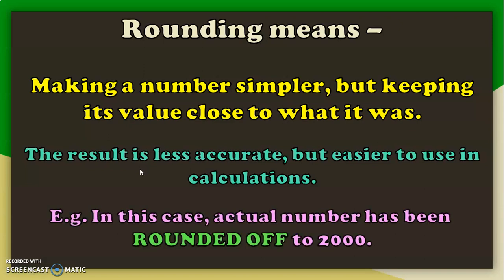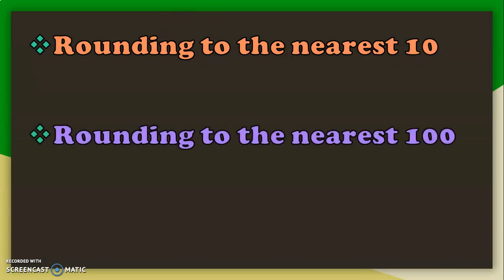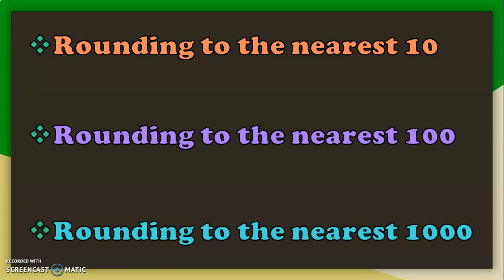In this case, the actual number has been rounded off to 2000. Rounding off can be done in the following ways: rounding to the nearest 10, rounding to the nearest 100, and rounding to the nearest 1000.